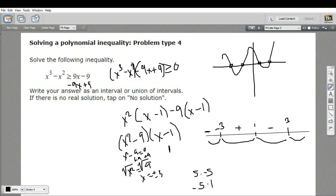And let's choose maybe 4 for this region. So 16 minus 9 again is 5. And 4 minus 1 is 3. That's a positive number.